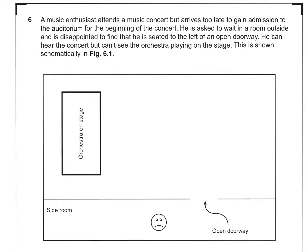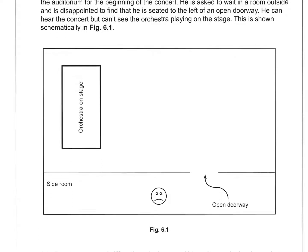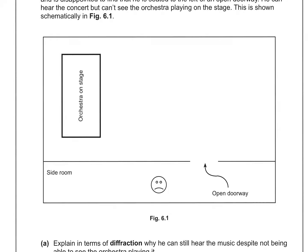Question 6. A music enthusiast attends a music concert but arrives too late to gain admission to the auditorium for the beginning of the concert. He is asked to wait in a room outside and is disappointed to find that he is seated to the left of an open doorway. He can hear the concert but can't see the orchestra playing on stage. This is shown schematically in figure 6.1. So we've got our orchestra, this is the main auditorium and we've got our unhappy customer here and this is the open doorway. So hearing is happening like this.